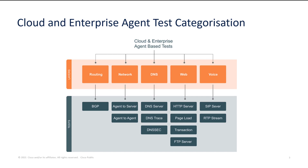Agent-to-server testing can use TCP or ICMP protocols, while agent-to-agent testing supports TCP or UDP. Agent-to-agent testing also supports bi-directional testing. Network tests can be scheduled to run at intervals in either minutes or hours, and the correlated data is displayed in the form of path visualization, which we'll see more of in upcoming demonstration videos.